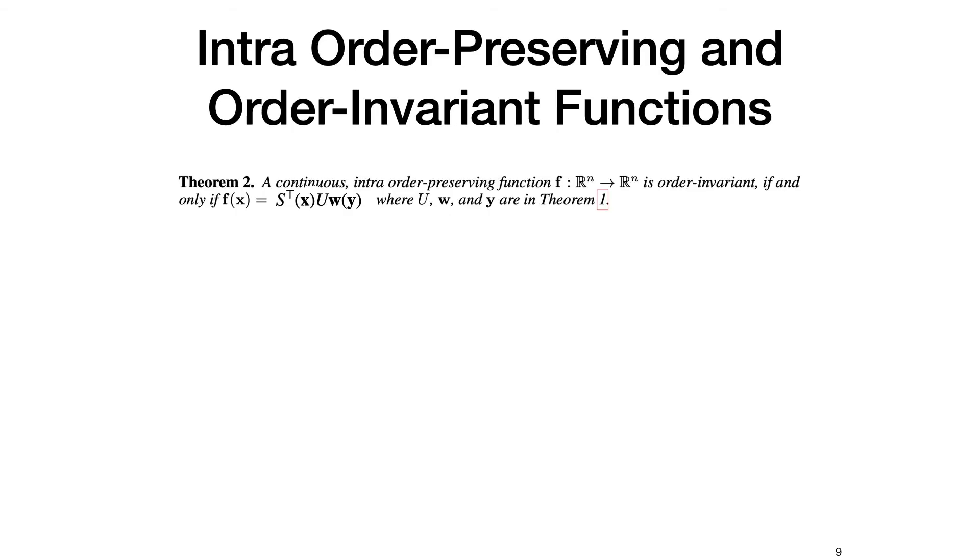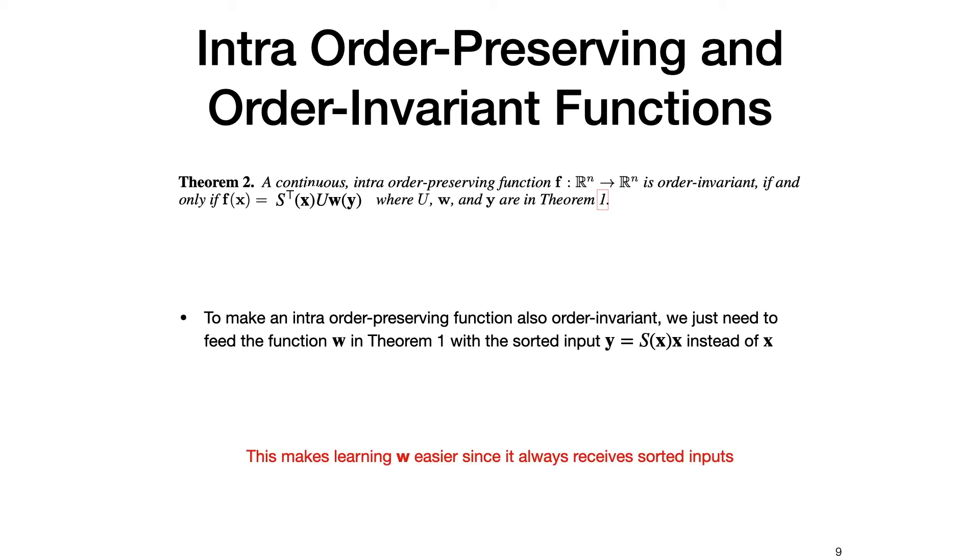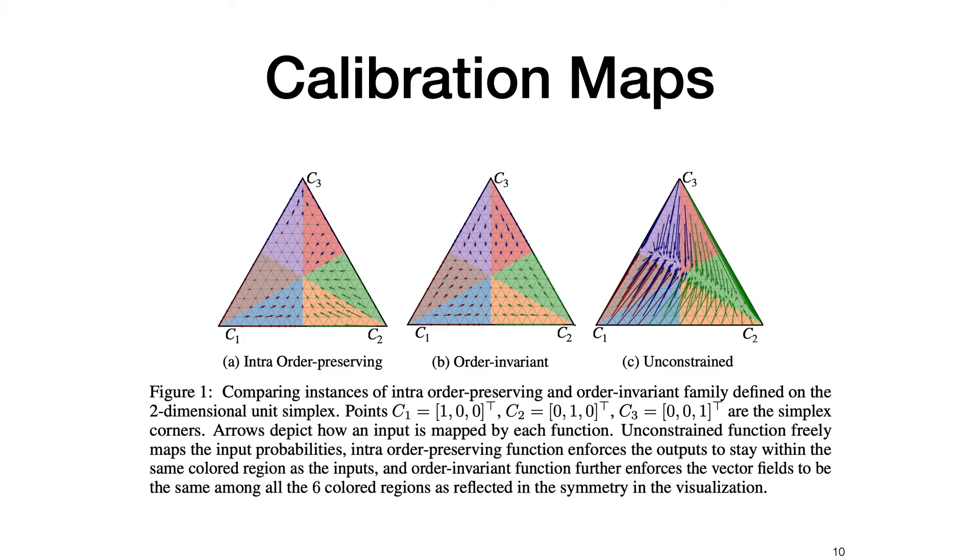To make an intra-order preserving function also order-invariant, we just need to feed the function W in the previous definition with the sorted version of X. This makes learning W easier since it always receives sorted inputs as shown in the symmetry of this calibration map on a two-dimensional simplex.